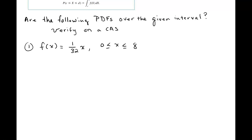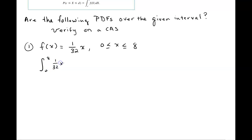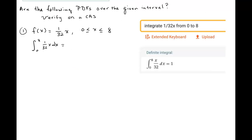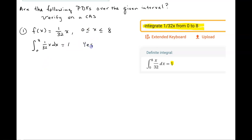The first example asks: is f(x) = (1/32)x a PDF over the interval from 0 to 8? This function is continuous and non-negative from 0 to 8. So we integrate (1/32)x dx from 0 to 8 and check if it equals 1. Using Wolfram Alpha — I'll show exactly what I typed — the answer comes out to 1. So yes, this is indeed a probability density function.